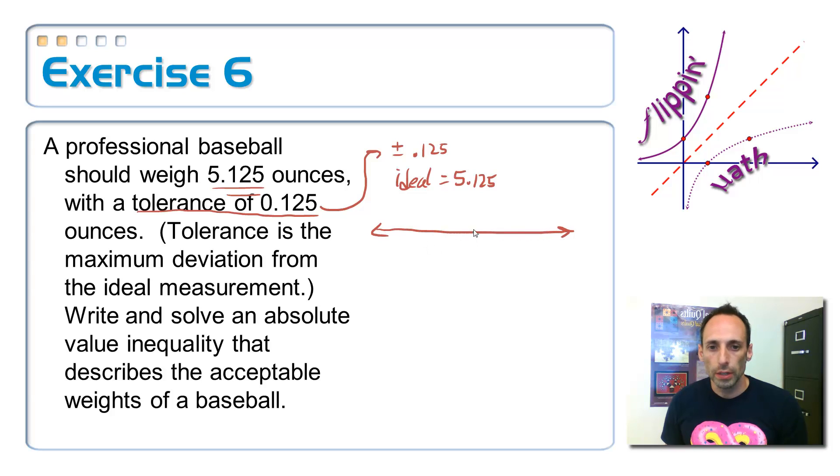Okay, so let's just put this on a number line and see if we can make sense of it. So I need, let's put smack dab in the middle here, this ideal weight, let's call it 5.125. And I'm allowed to go up by 0.125, and I'm allowed to go down by 0.125.